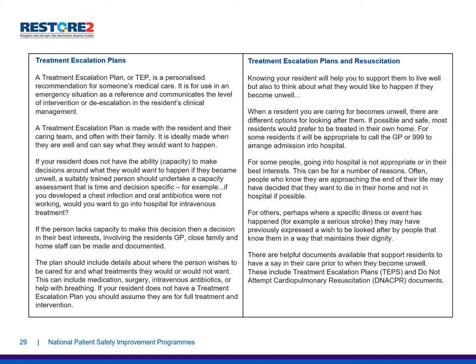For some residents, it would be appropriate to call the GP or 999 to arrange admission into hospital. But for some people, going into hospital is not appropriate or in their best interests. Often people who know they are approaching the end of their life may have decided they want to die in their own home. Others may have previously expressed a wish to be looked after by people that know them in a way that maintains their dignity. There are helpful documents available that support residents to have a say in their care prior to becoming unwell, including treatment escalation plans or TEPs and do not attempt CPR — DNA CPR documents.